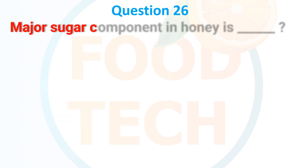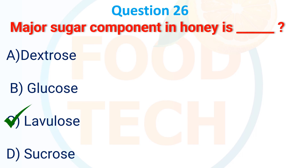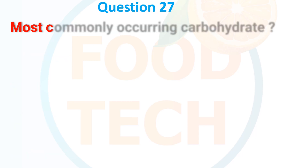Question 26: Major sugar component in honey is — A. Dextrose, B. Glucose, C. Levulose, D. Sucrose. The answer is C. Levulose.